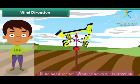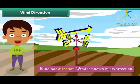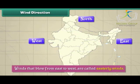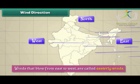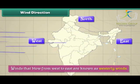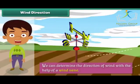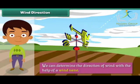Wind has direction and is known by the direction from which it blows. For example, winds that blow from east to west are called easterly winds, and winds that blow from west to east are known as westerly winds. We can determine the direction of wind with the help of a wind vane, whose arrow indicates the direction from which the wind is blowing.